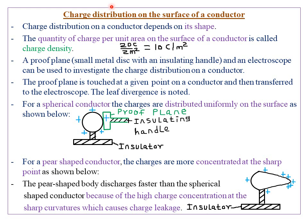Today we are looking at charge distribution on the surface of a conductor. Charge distribution on a conductor depends on the shape of that particular conductor. For sharp shapes, the charge distribution is usually very high — the concentration of charges at sharp points is always very high.